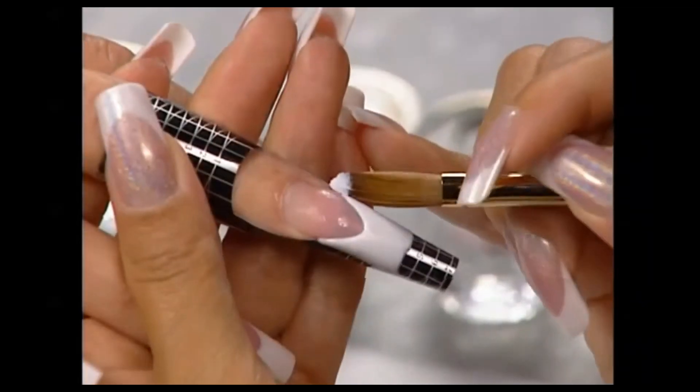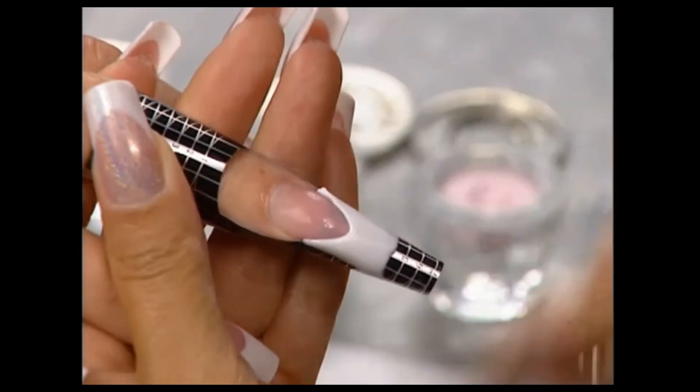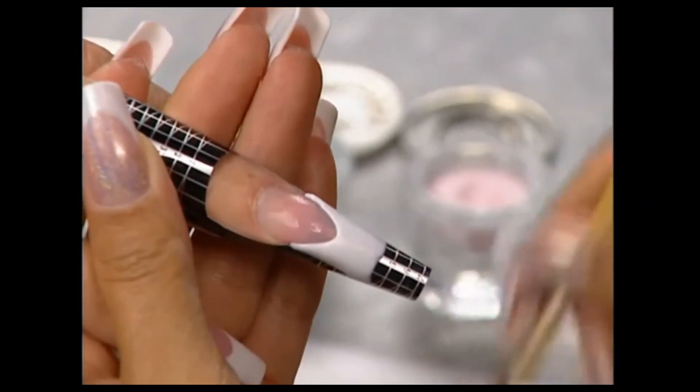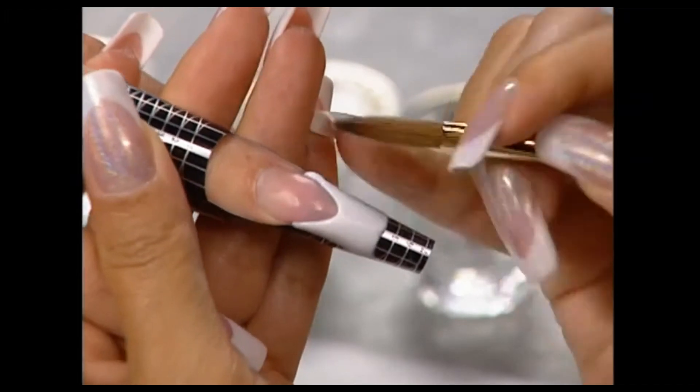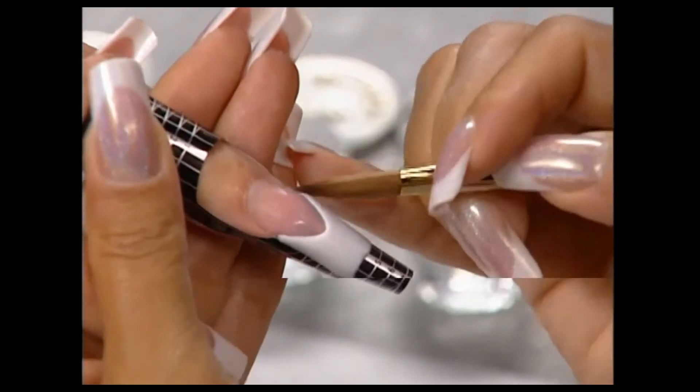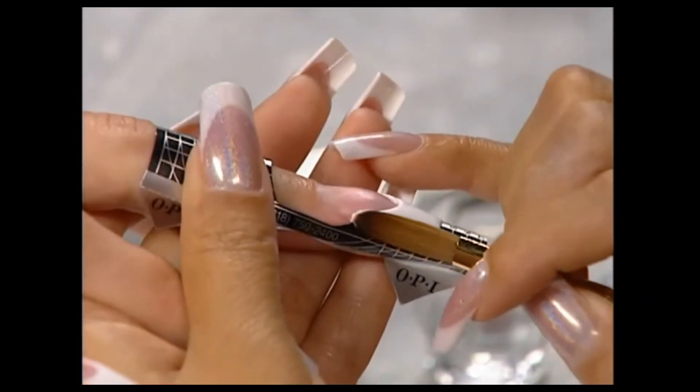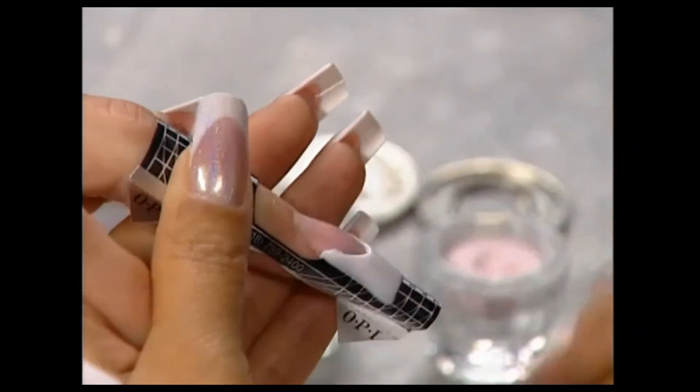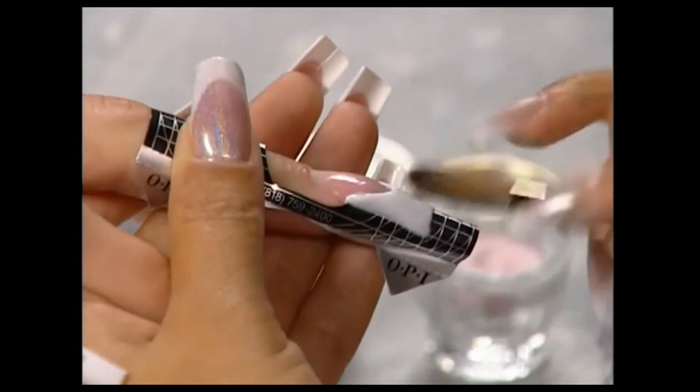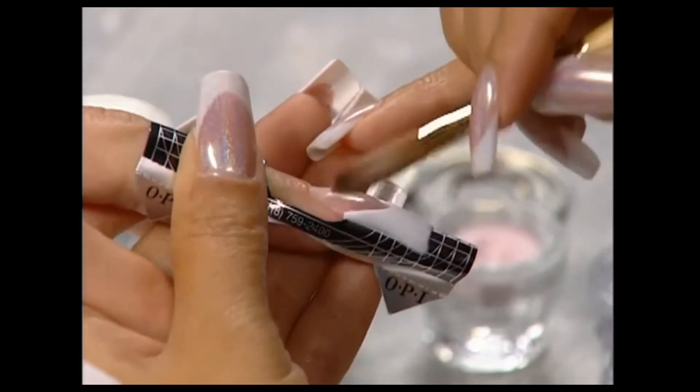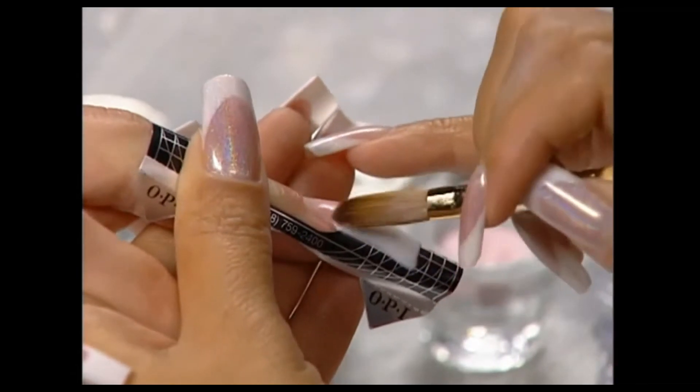Reinforce and deepen the side of the smile line by applying a small dry bead of product at the corner point. Reinforce and deepen the other side of the smile line by applying another small dry bead of product in the corner. Use the tip of the brush to sharpen the smile line.